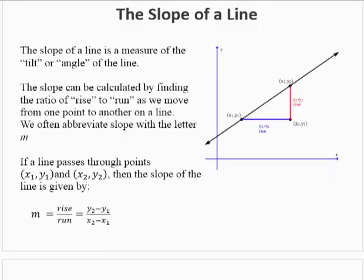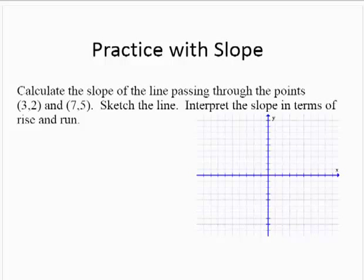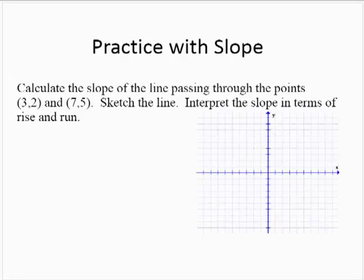So let's see some examples. Calculate the slope of the line passing through the points (3, 2) and (7, 5). Sketch the line and interpret the slope in terms of rise and run.